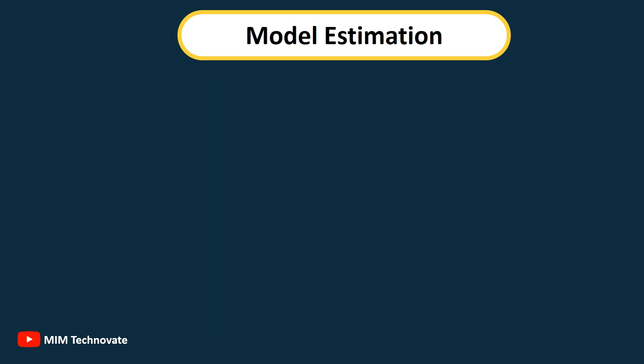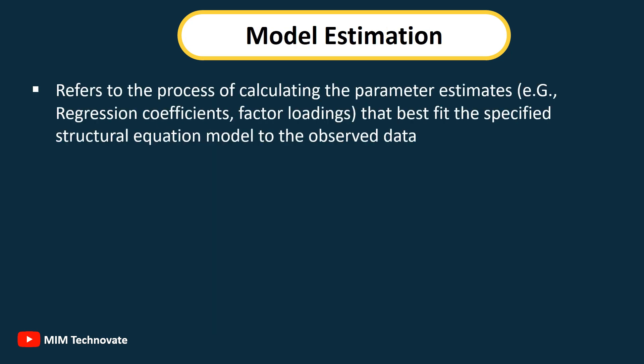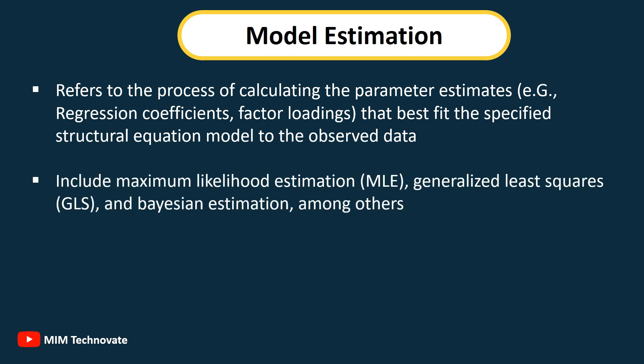Model Estimation: Refers to the process of calculating the parameter estimates (e.g., regression coefficients, factor loadings) that best fit the specified Structural Equation Model to the observed data. Estimation methods include Maximum Likelihood Estimation (MLE), Generalized Least Squares (GLS), and Bayesian estimation, among others.